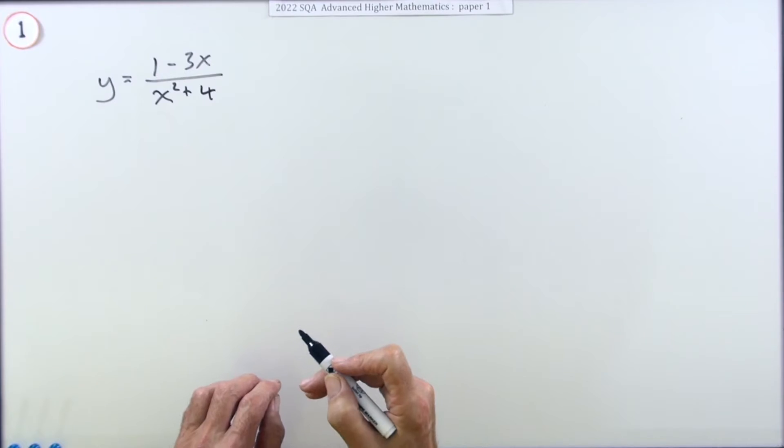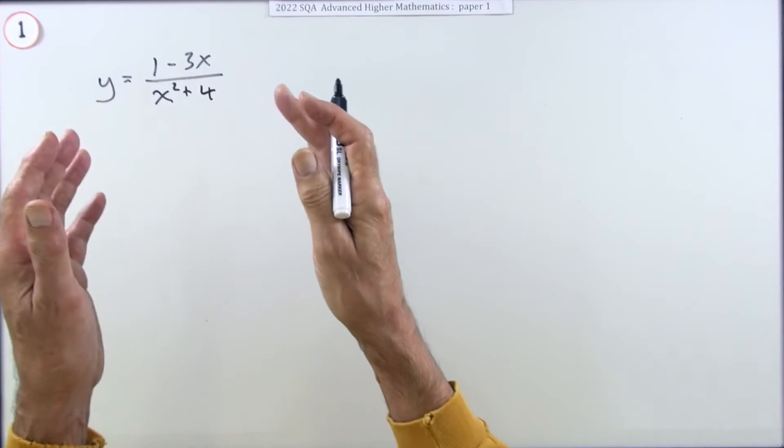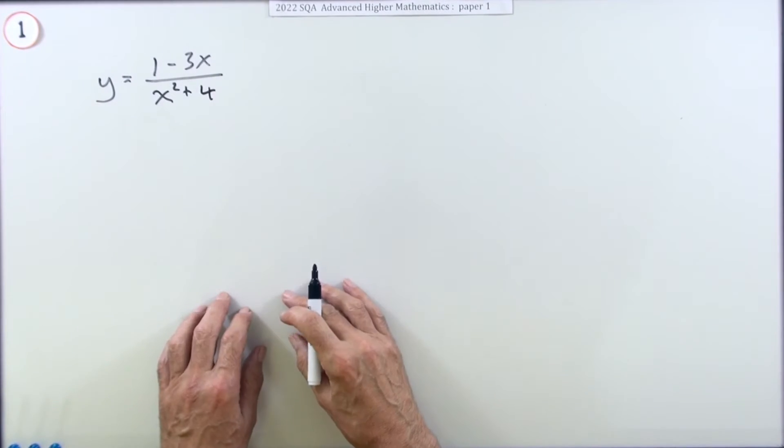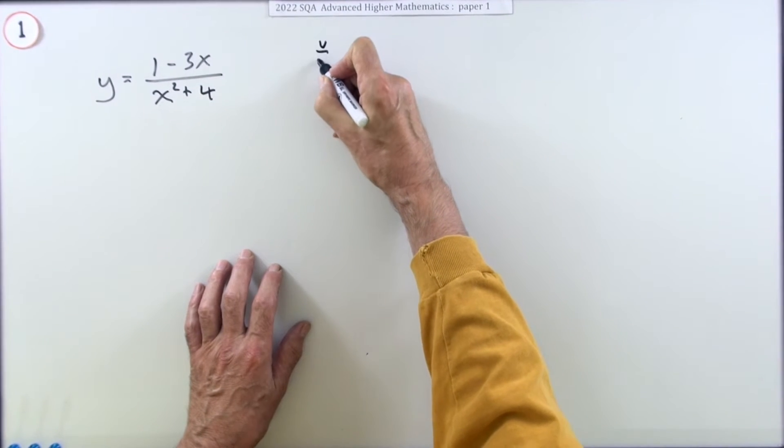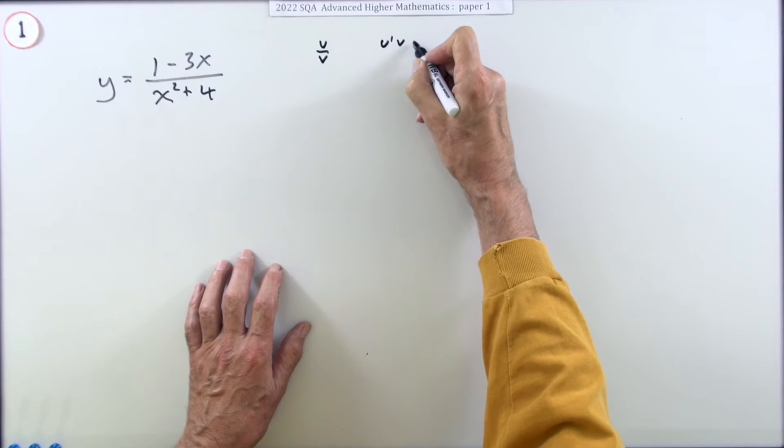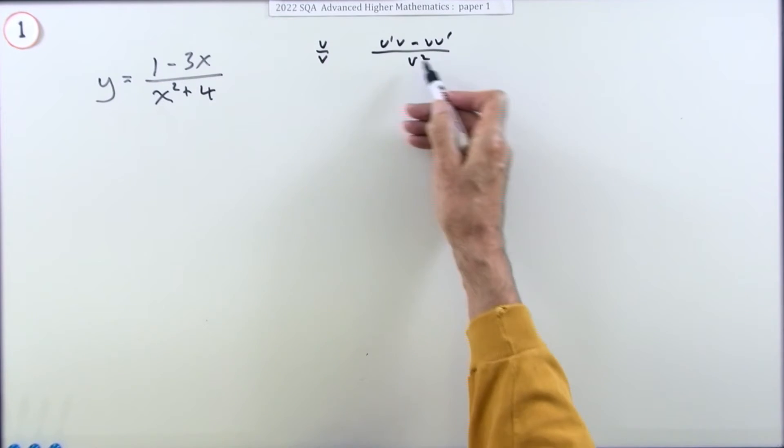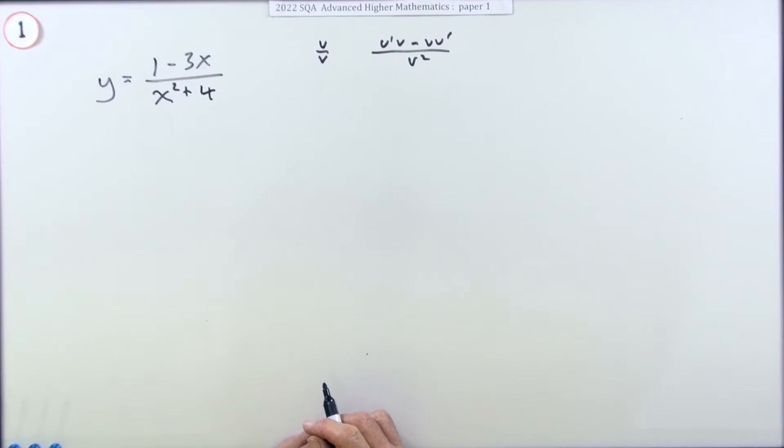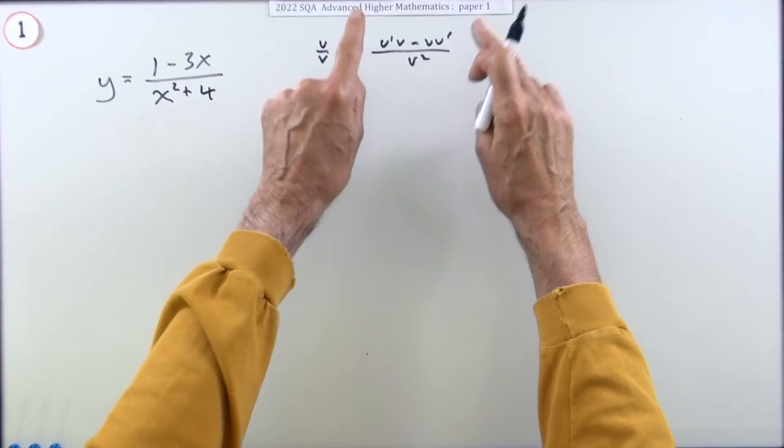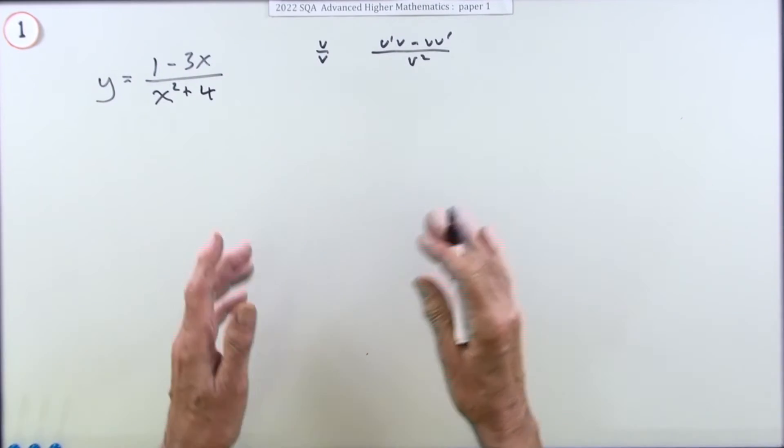As soon as you look at that you should see you've got a rational function, so you're going to be using the quotient rule. Not that the quotient rule is anything different, it's just the product rule repackaged for instant use. The pattern for that, if you've got u over v, then it's going to be u dashed v minus u v dashed over v squared.